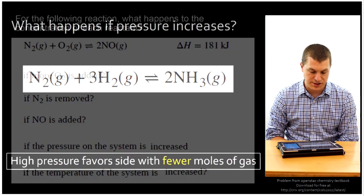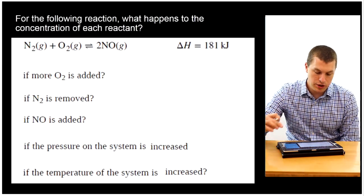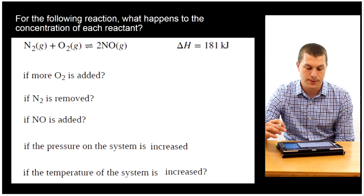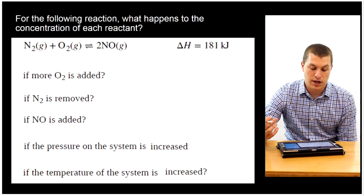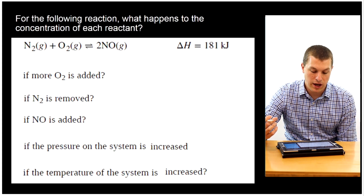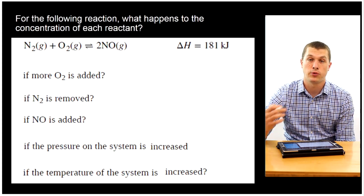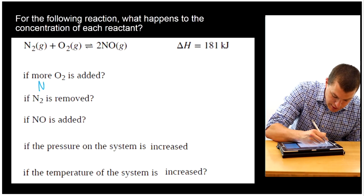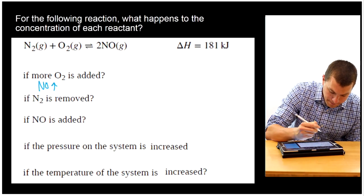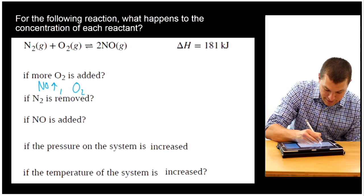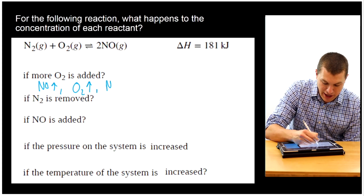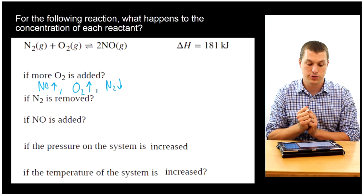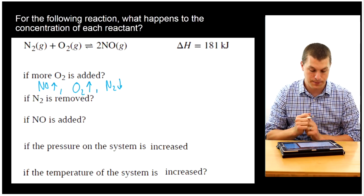Let's quickly go through a few more examples. Here we're dealing with a different reaction: nitrogen plus oxygen goes to nitrogen monoxide (NO). If more O₂ is added, that means we're adding it to the reactant side, and our NO concentration is going to go up. Meanwhile, our nitrogen will drop some, because some of that added oxygen will combine with the nitrogen, shifting the equilibrium to the right side.